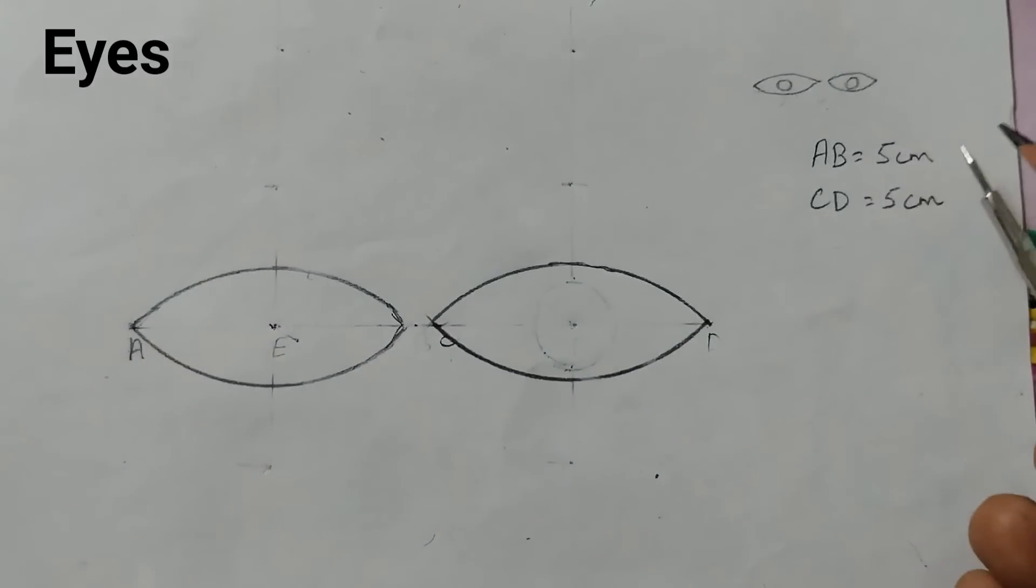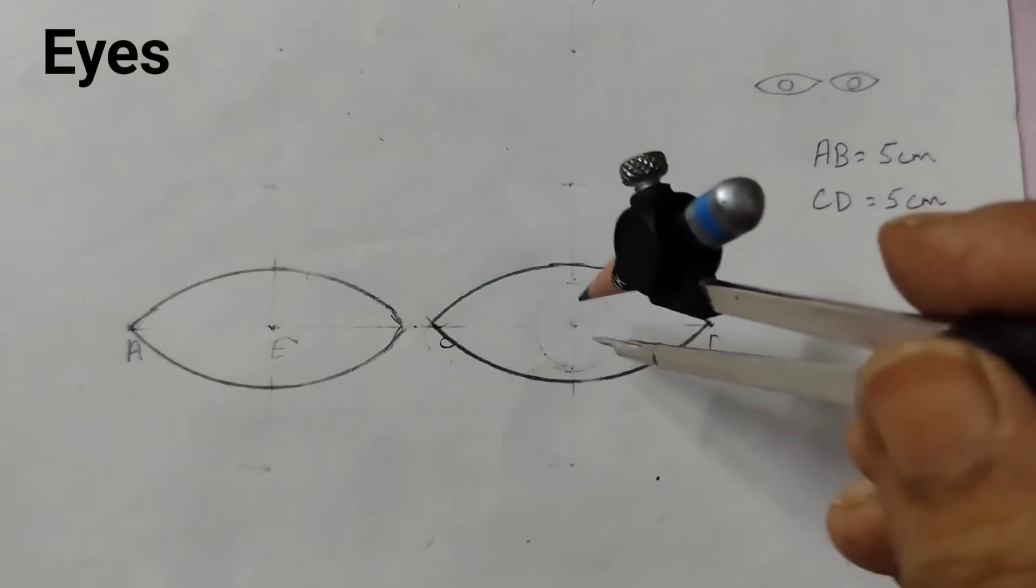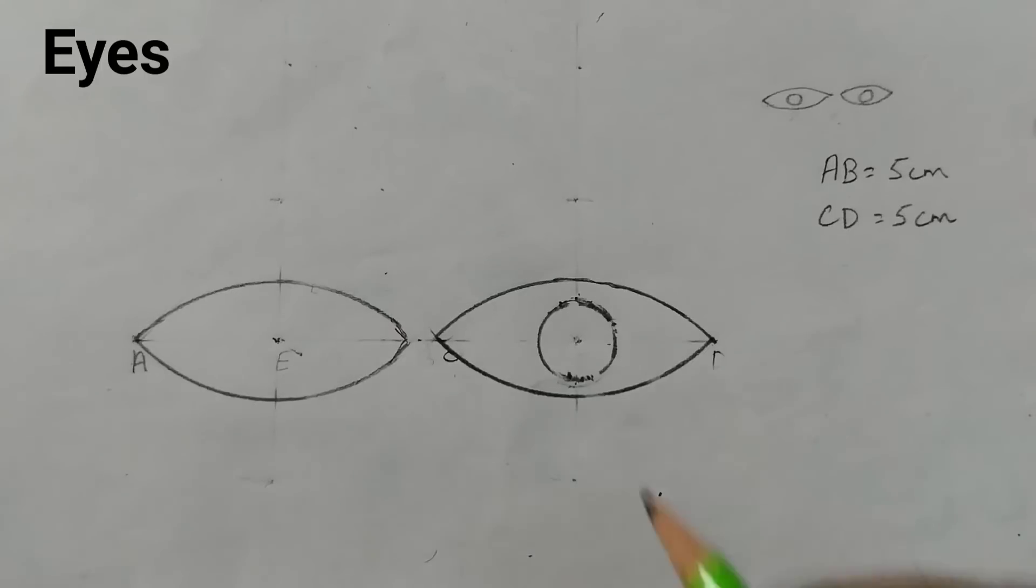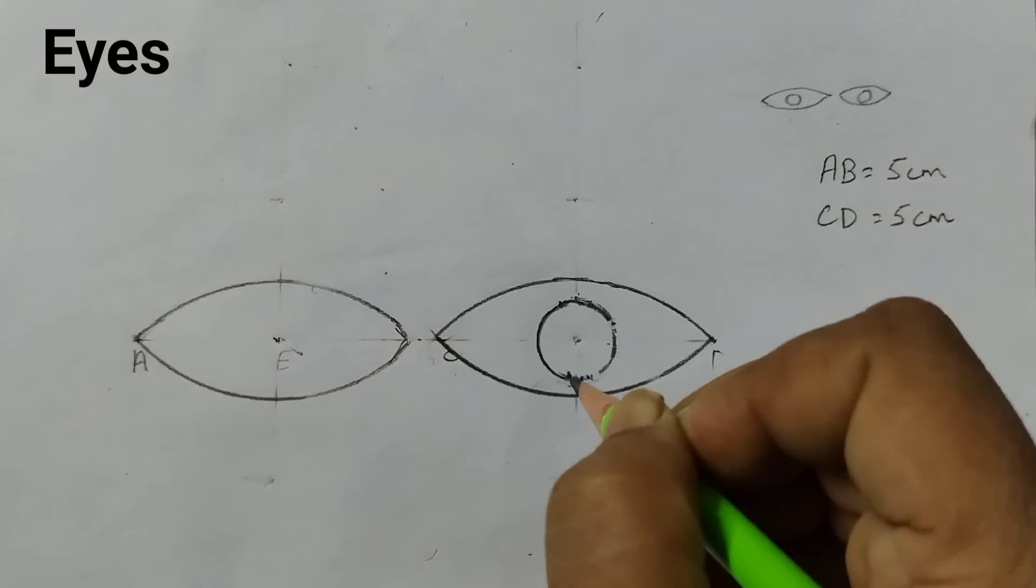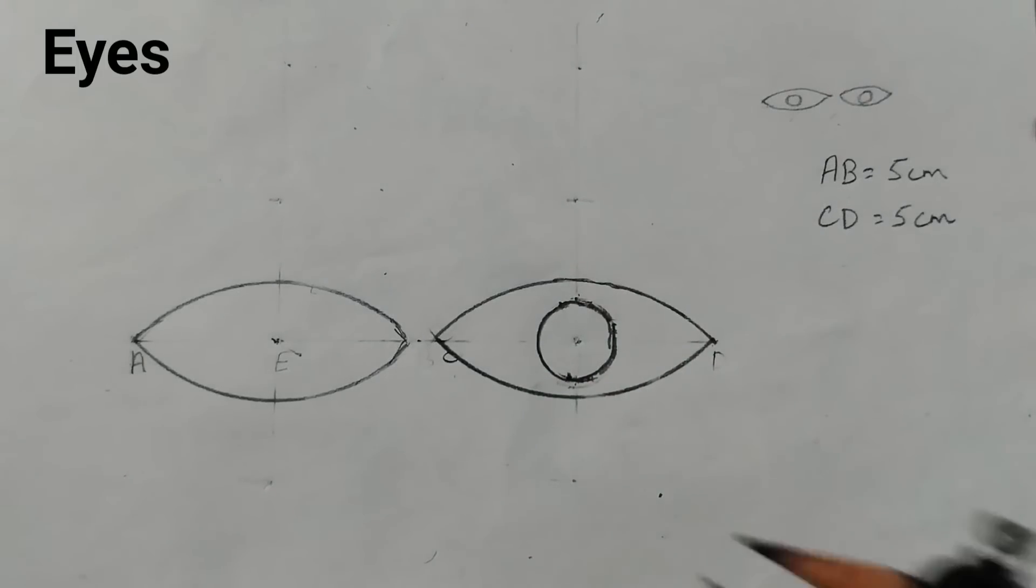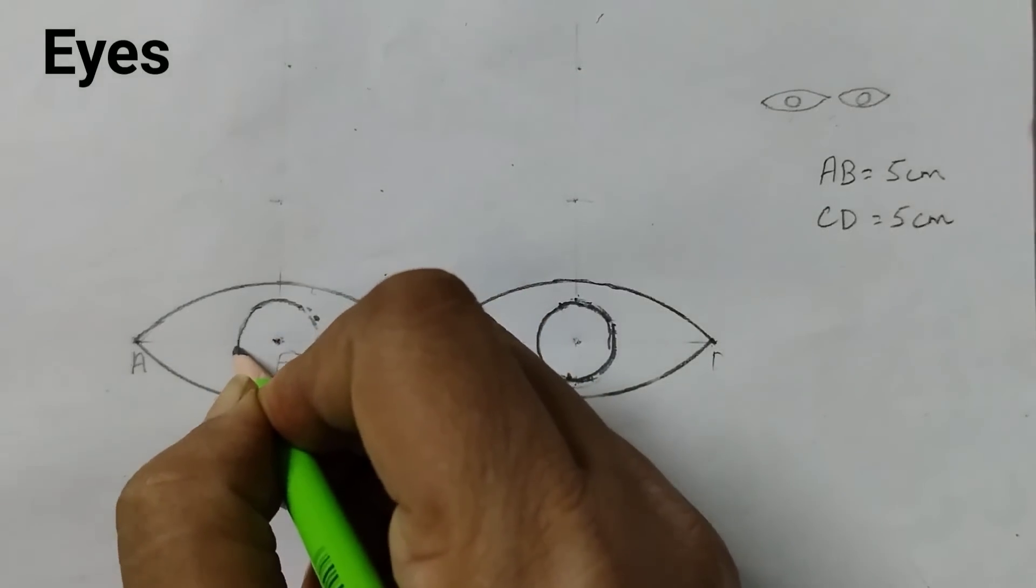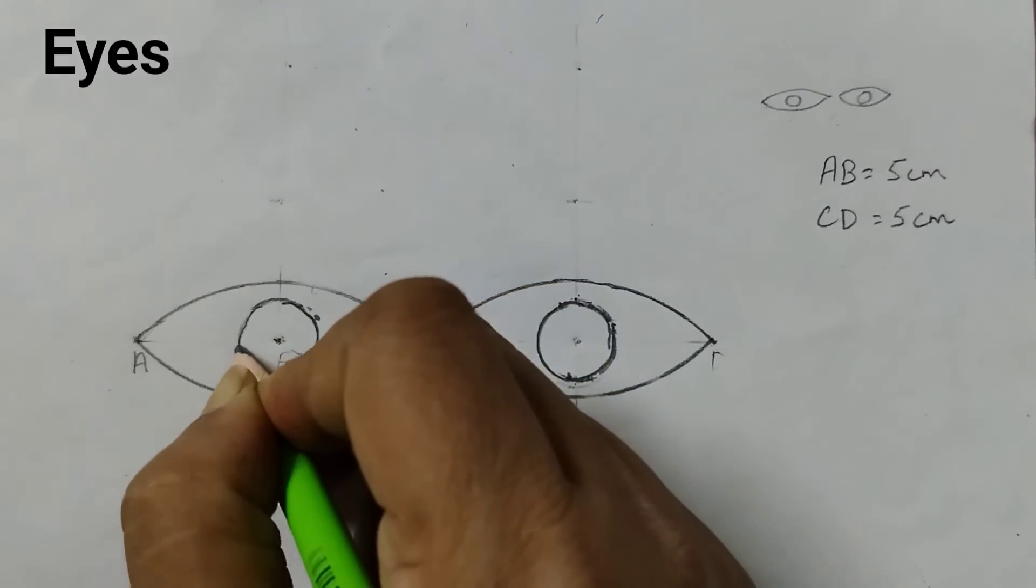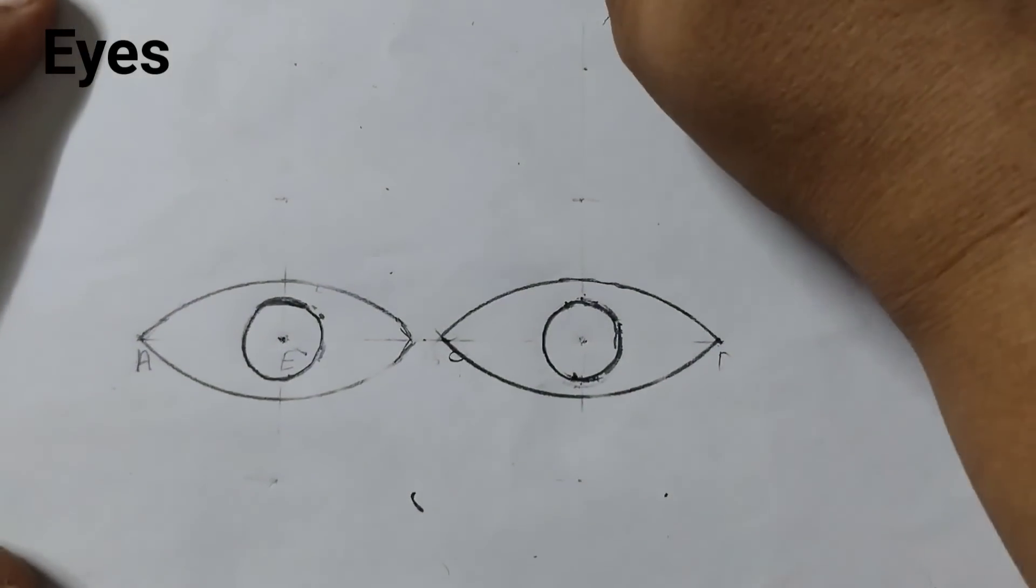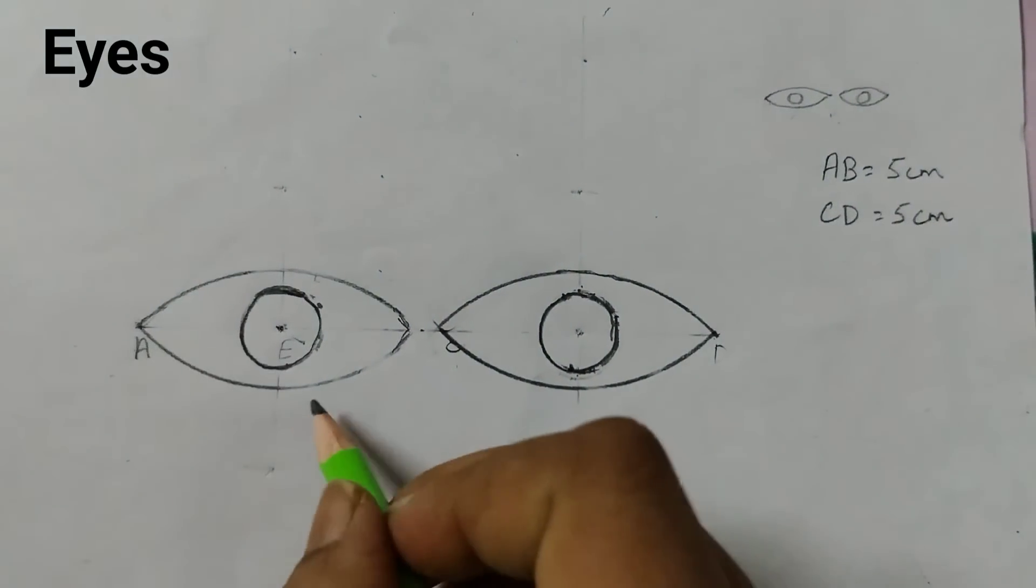Now, take the compass and draw these small circles inside the eyes, one here and one here, with these as the center points. Because it is a very small circle, it is a little difficult to draw. With the same measurement, we will draw a circle here. Whatever extra is there, we can erase it off and darken wherever needed.